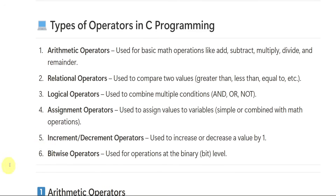There are 6 types of operators in C programming. One is arithmetic operators, which are used for mathematical operations like addition, subtraction, division, multiplication, and so on. Relational operators are used to compare two values — like greater than, less than, equal to. When we are comparing two values, we use relational operators. Then we have logical operators, which are used for multiple conditions like 'this and that'.